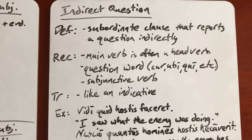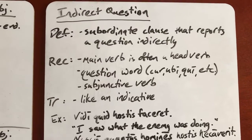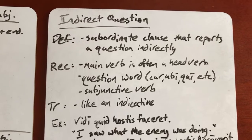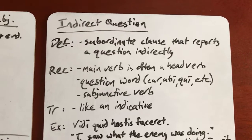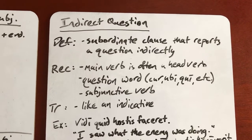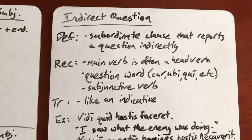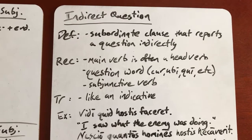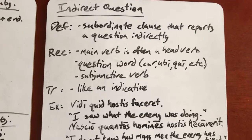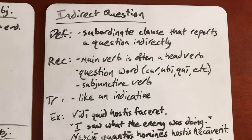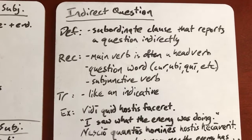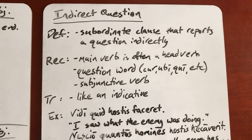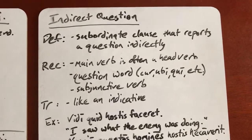It's called indirect question. The definition is: a subordinate clause that reports a question indirectly. It tells you a question, but it's not using the exact words the person said — it's reporting it indirectly. It is a subordinate clause, so you can't have an indirect question be your main verb. Now, how to recognize it: a lot of times your main verb is going to be a head verb — you may remember with indirect statement we had a head verb introducing that. But the thing that's really going to help you recognize an indirect question is the presence of a question word.